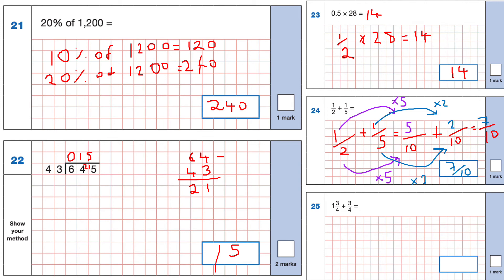Question 25: 1 and 3 quarters plus 3 quarters. Ignoring the 1 for now: 3/4 plus 3/4 is 6/4, which simplifies to 3/2 by dividing top and bottom by 2. 3/2 is an improper fraction, the same as 1 and a half. Adding the whole number 1 gives us 2 and a half.